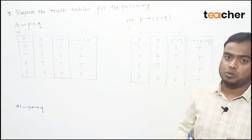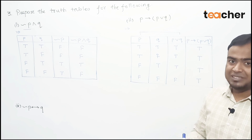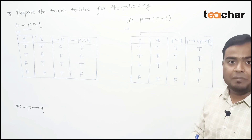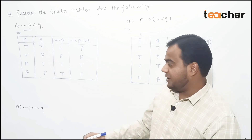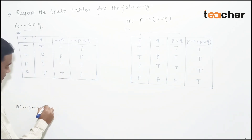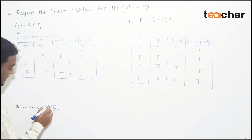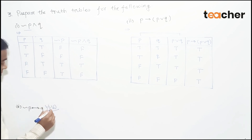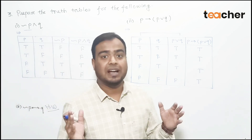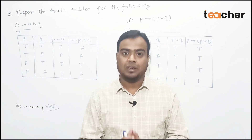This example is a tautology because all the final column values are true. We have solved this question. Now in the comments, tell us: is the next example a tautology, contradiction, or contingency? Please note it down and see the next lecture.